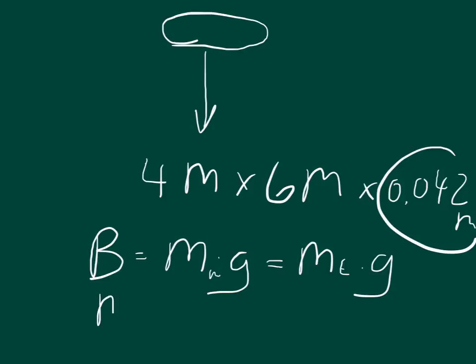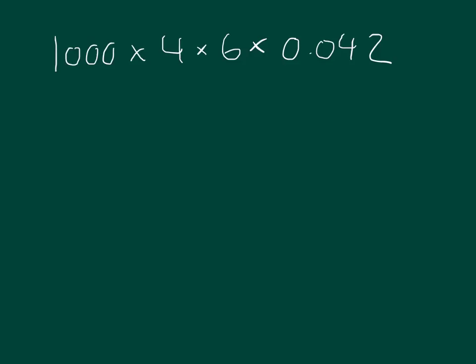Now mass is equal to the density times the volume. The density of water is defined as 1,000 kilograms per cubic meter. And so you just take 1,000 and multiply it by our dimensions up here. And so this is actually going to equal 1,008.